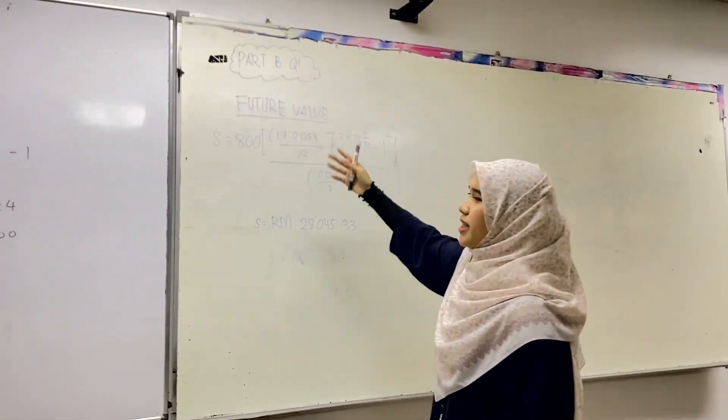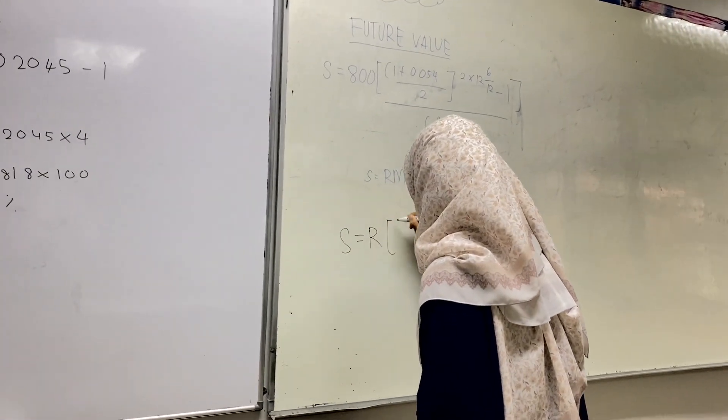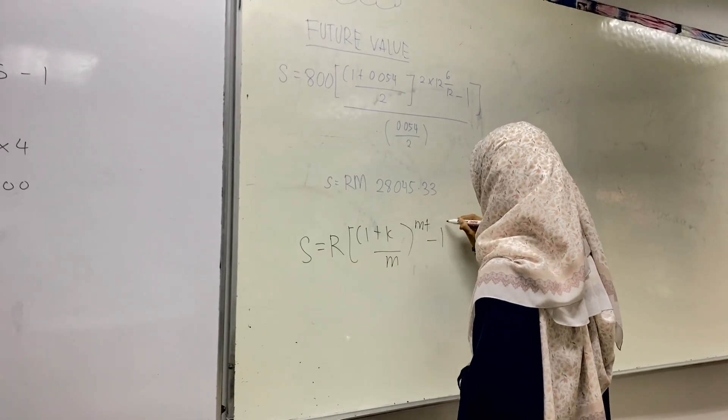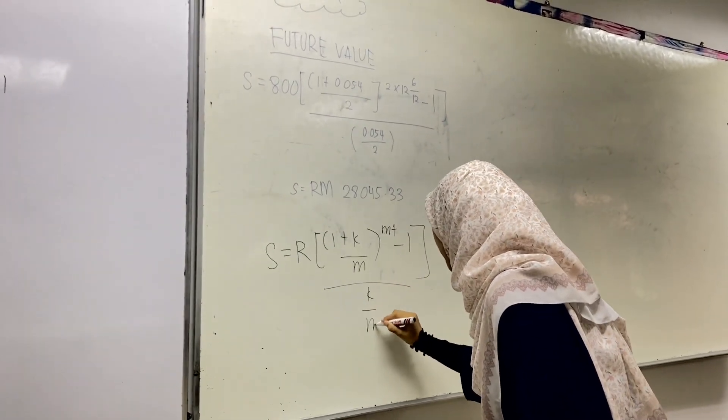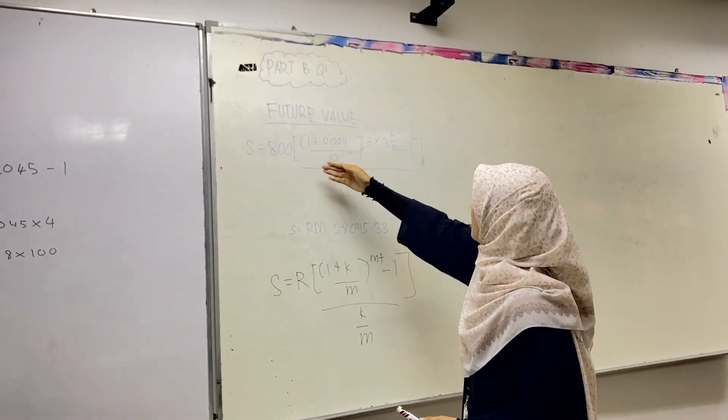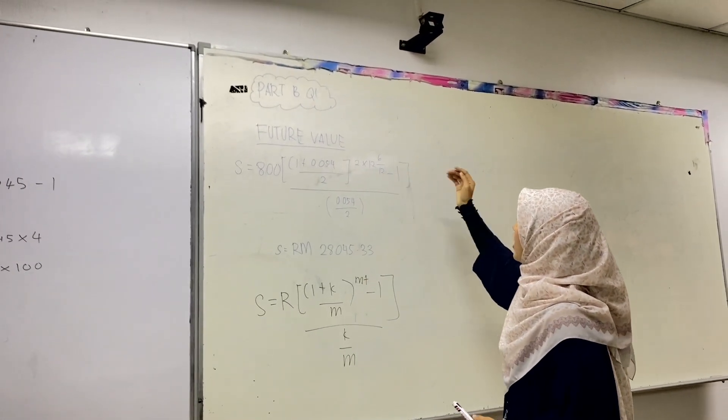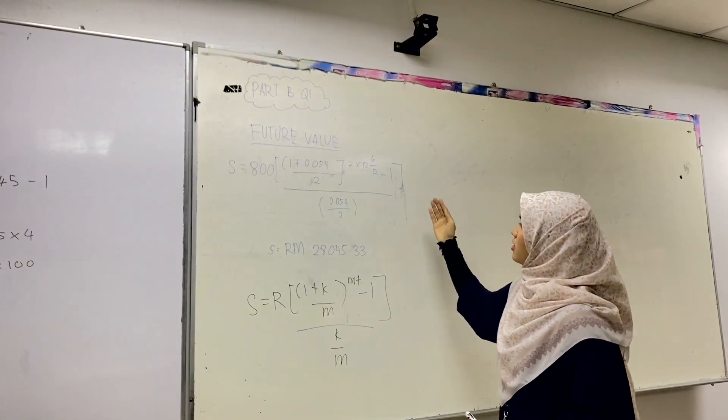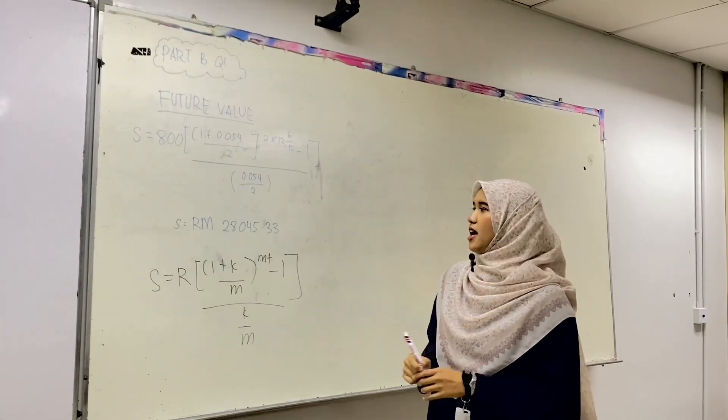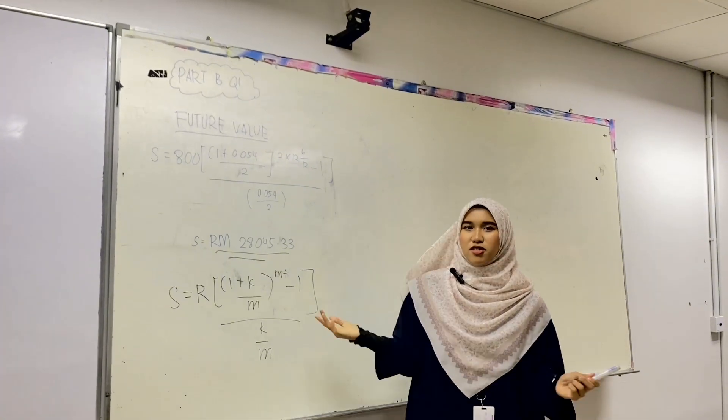Hi guys, I'm going to explain Part B question 1. It is a future value question. The formula is S equals R times (1 plus K/M)^(MT) minus 1, divided by K/M. This is the formula we're going to use for the future value. As you can see, R is 800, and 1 plus K/M is 0.054 per 2, and MT is 2 times 12.5, and negative 1. The K/M for the book is 0.054 per 2. You can calculate all of this, and we're going to get the right answer is RM28,045.32.